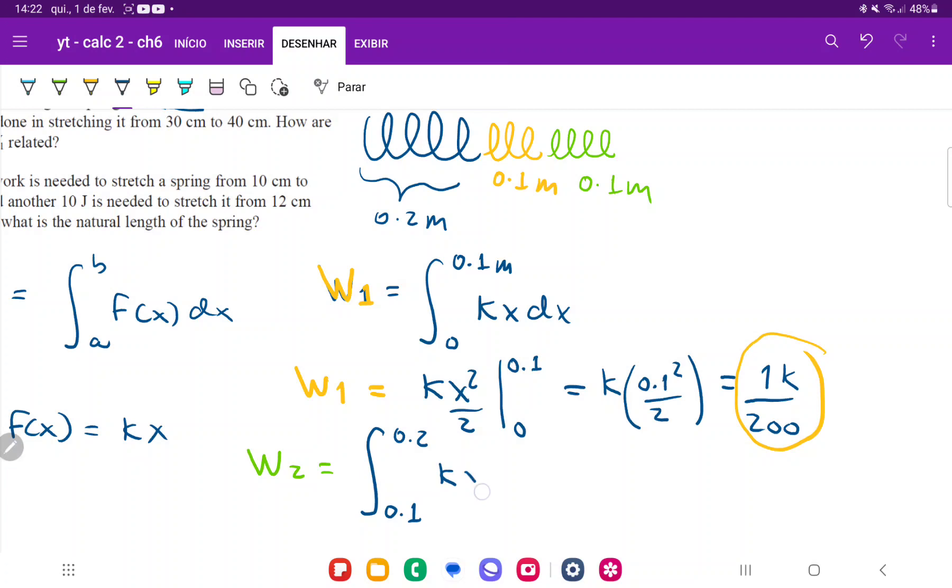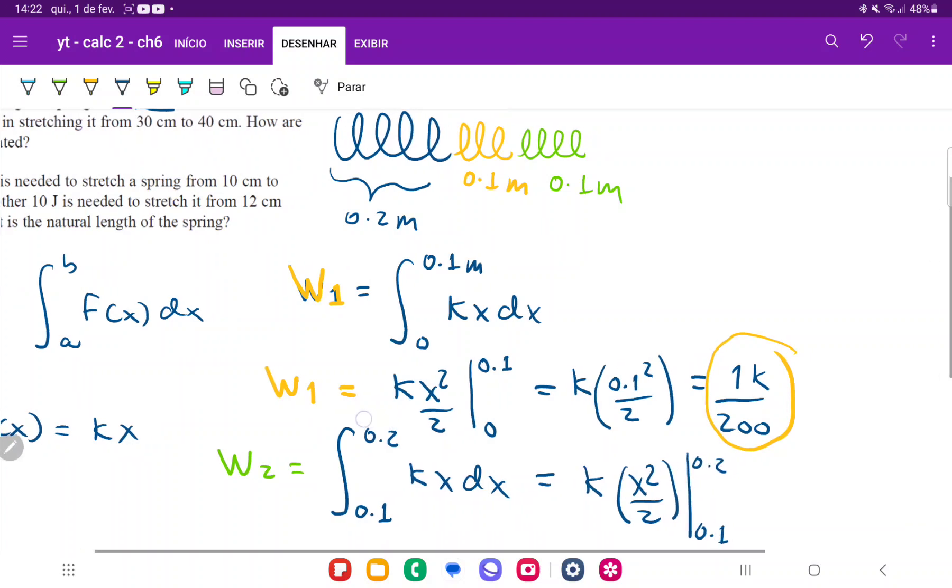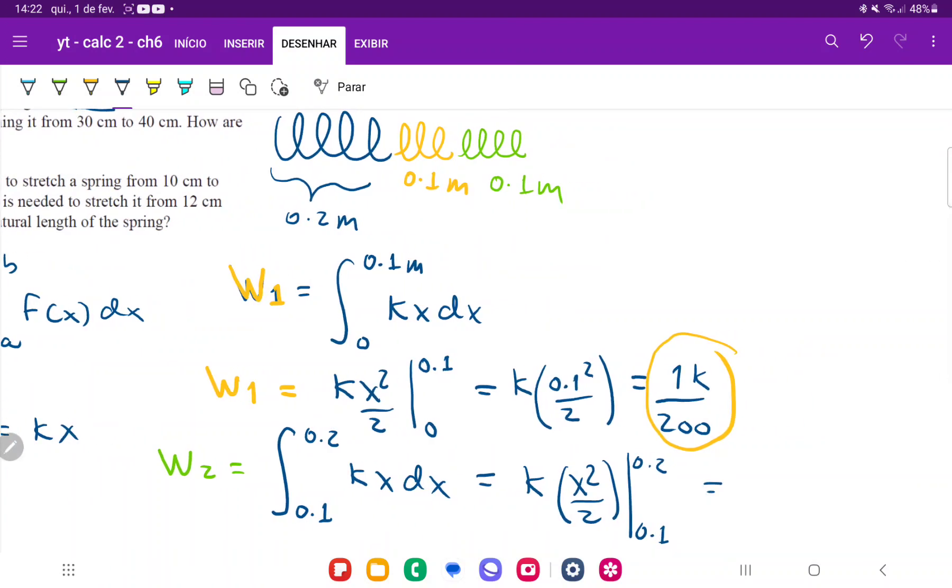Once more, this integral is kx dx. If we integrate this, k goes outside, the integral of x is x squared over 2, but now we're evaluating this from 0.1 to 0.2.